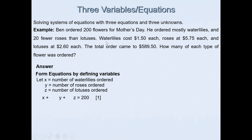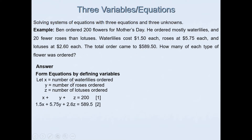Water lilies cost $1.50 each, so we have prices for each variety and a total order of $589.50. Putting this together: 1.5x + 5.75y + 2.6z = 589.50. This is our second equation.